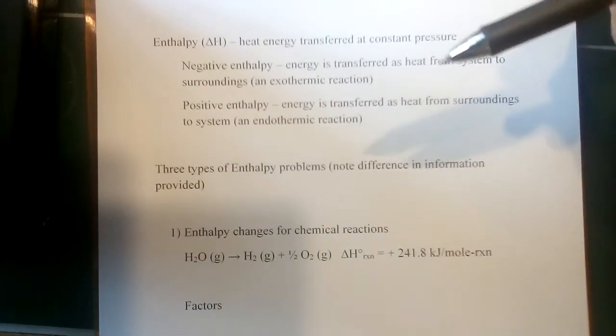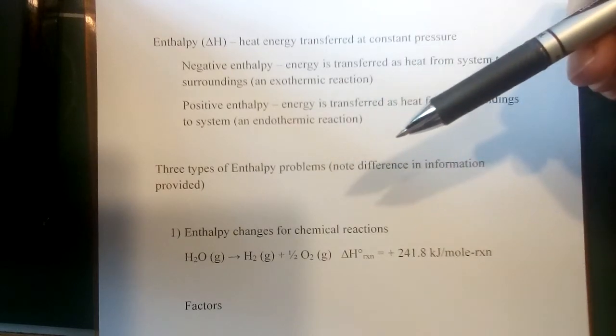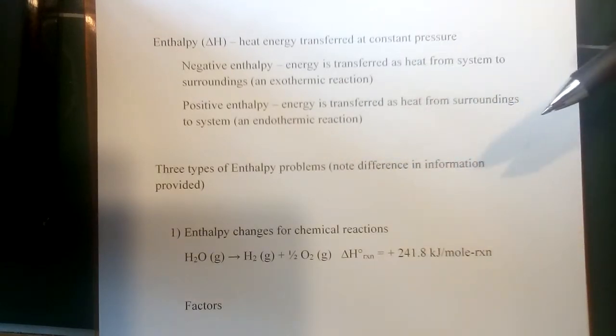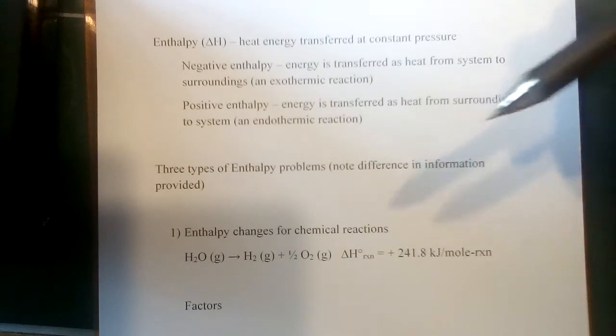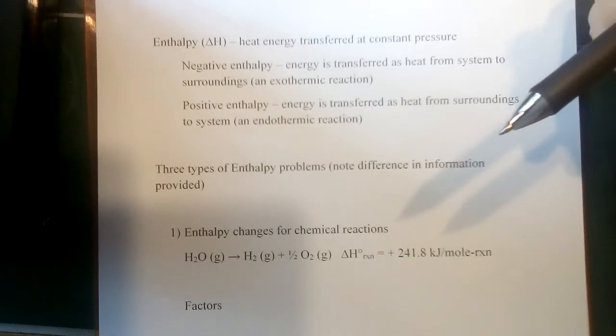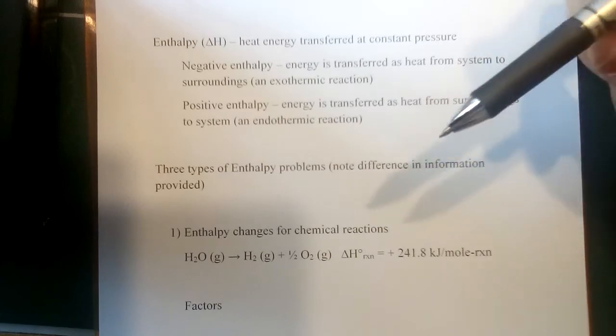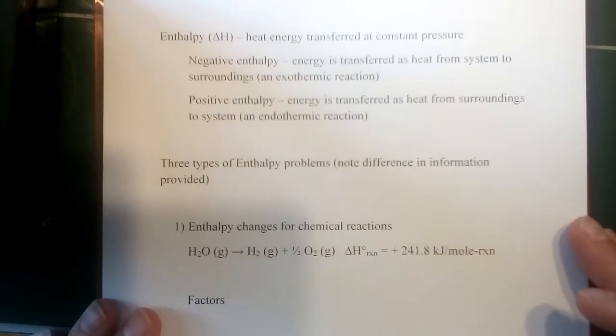In the opposite case, if the enthalpy is positive, that would mean there's more potential energy in the products than there were in the reactants. So potential energy enthalpy has gone up. That's going to require that energy to have come from somewhere, and that will have come from the kinetic energy of the surroundings. So we'll have to have a consequent reduction in kinetic energy in that case.